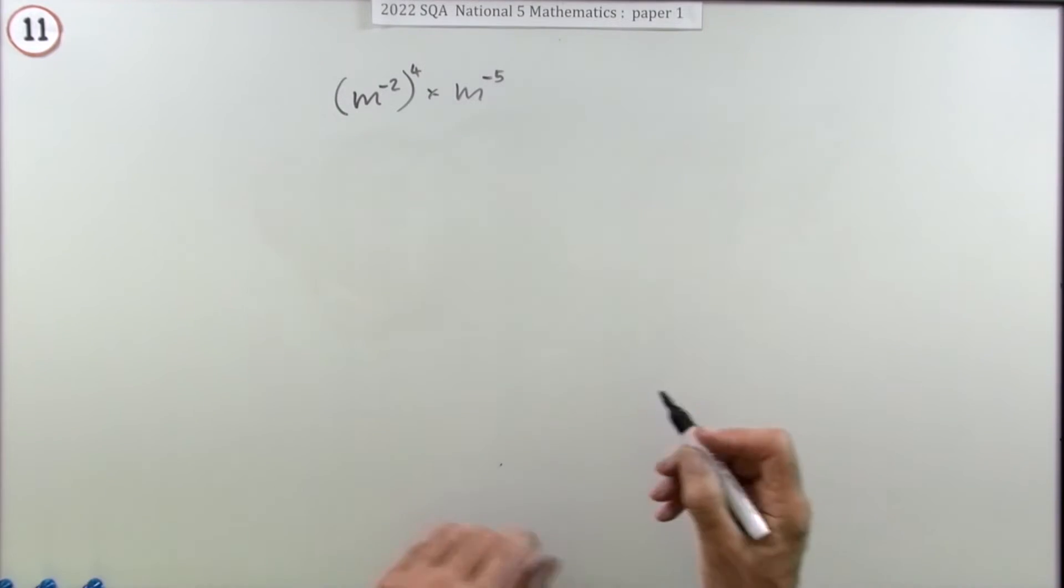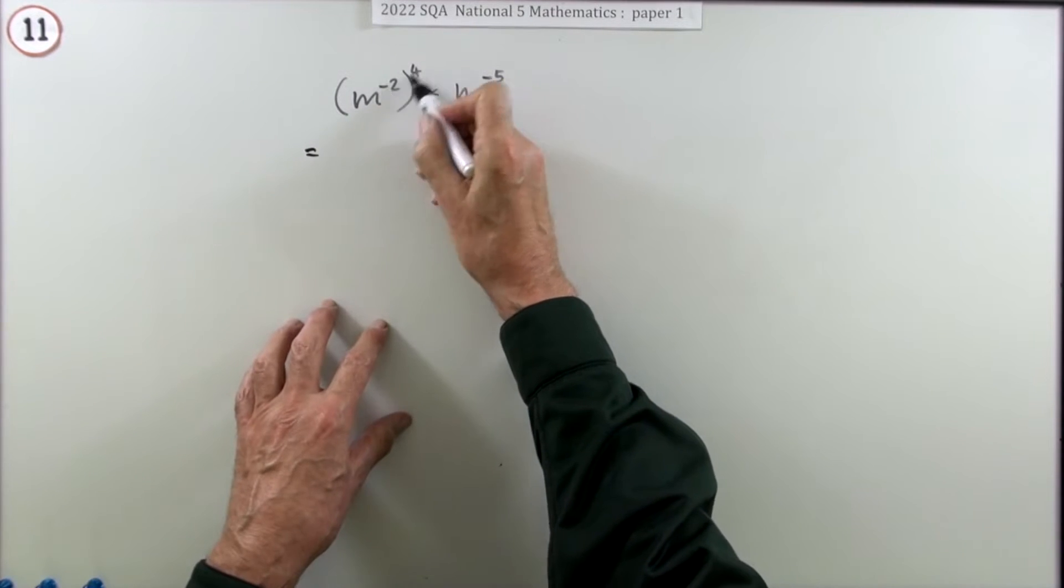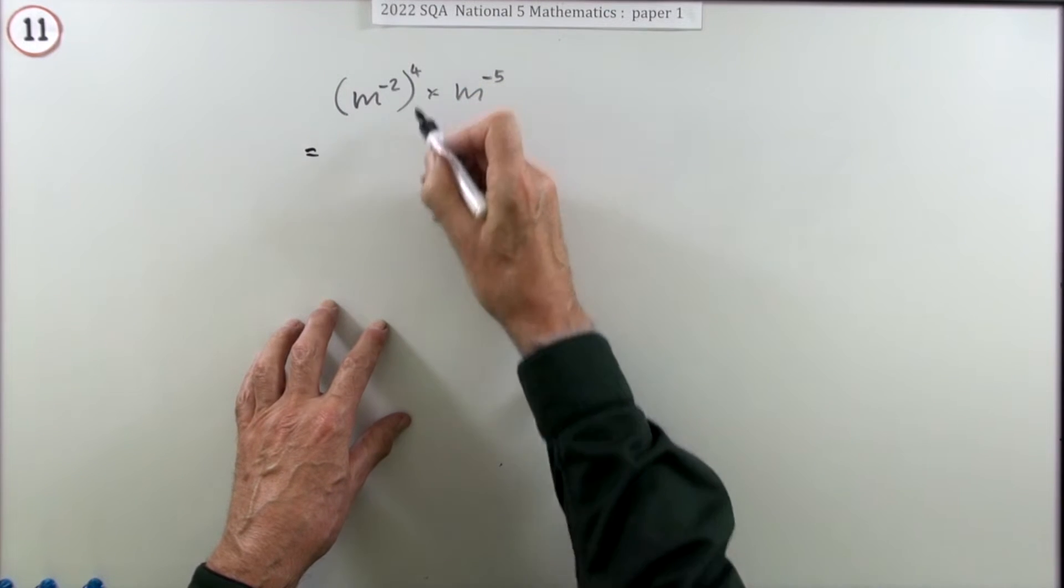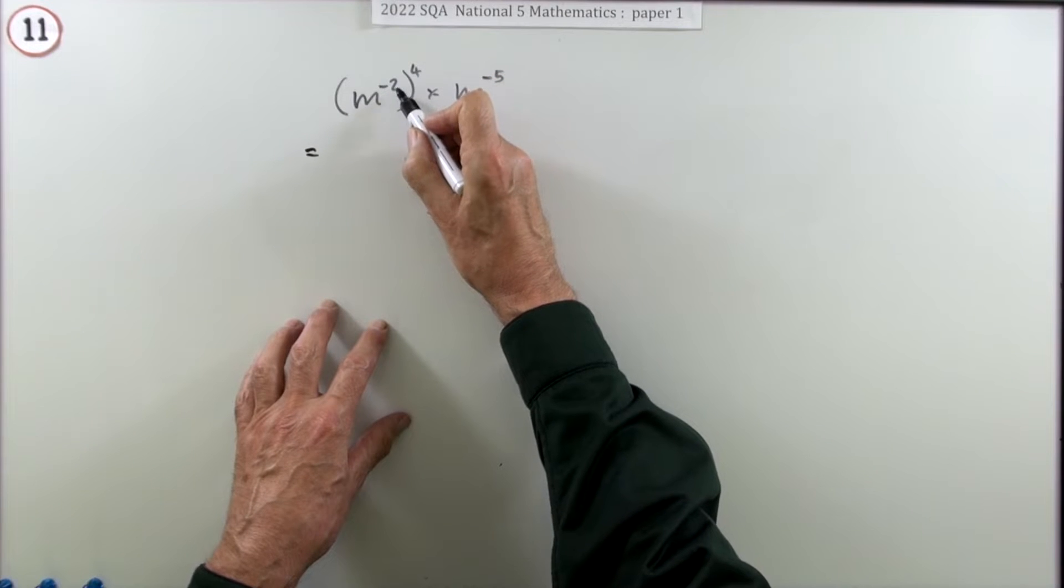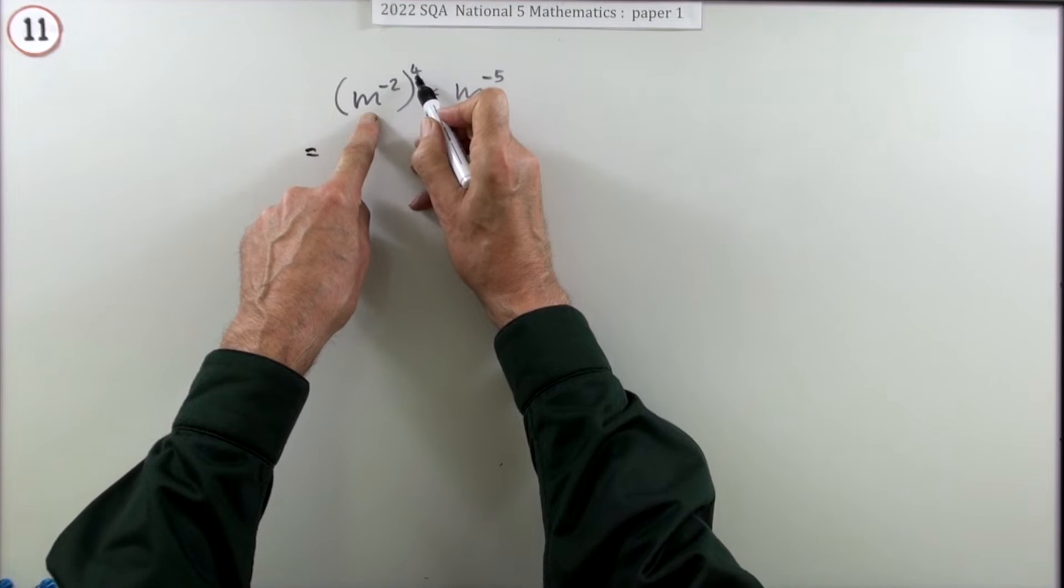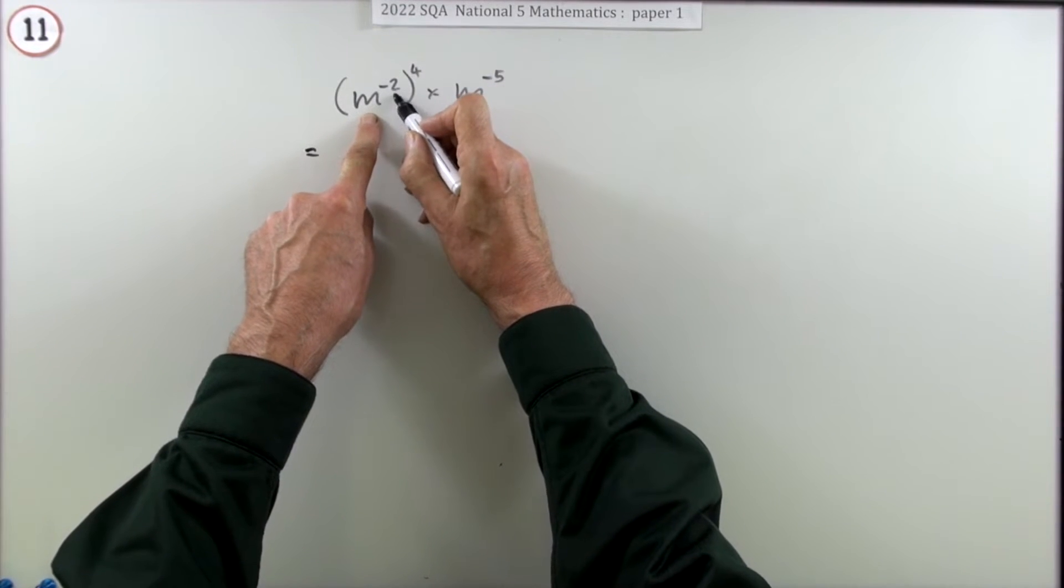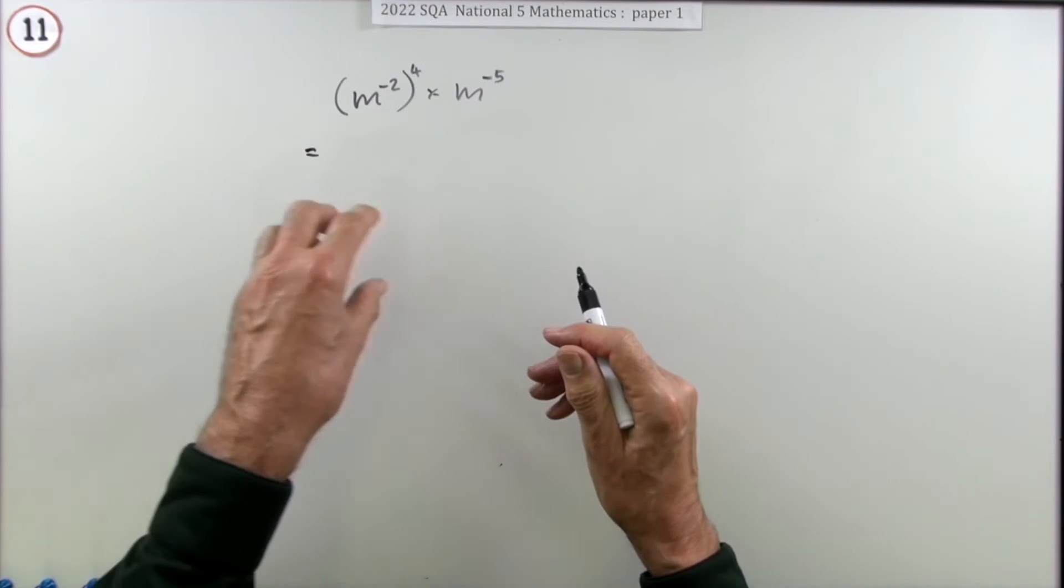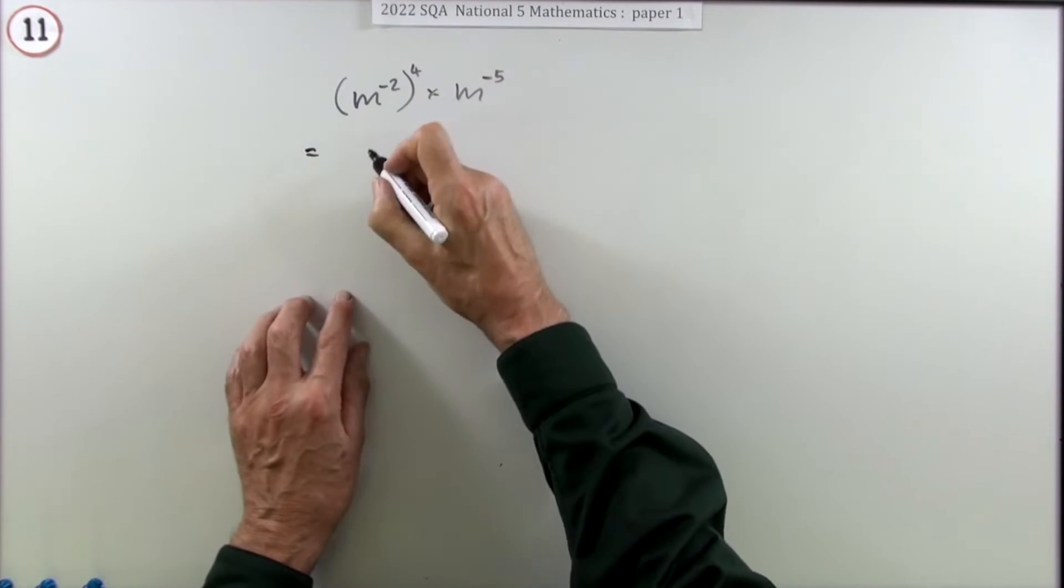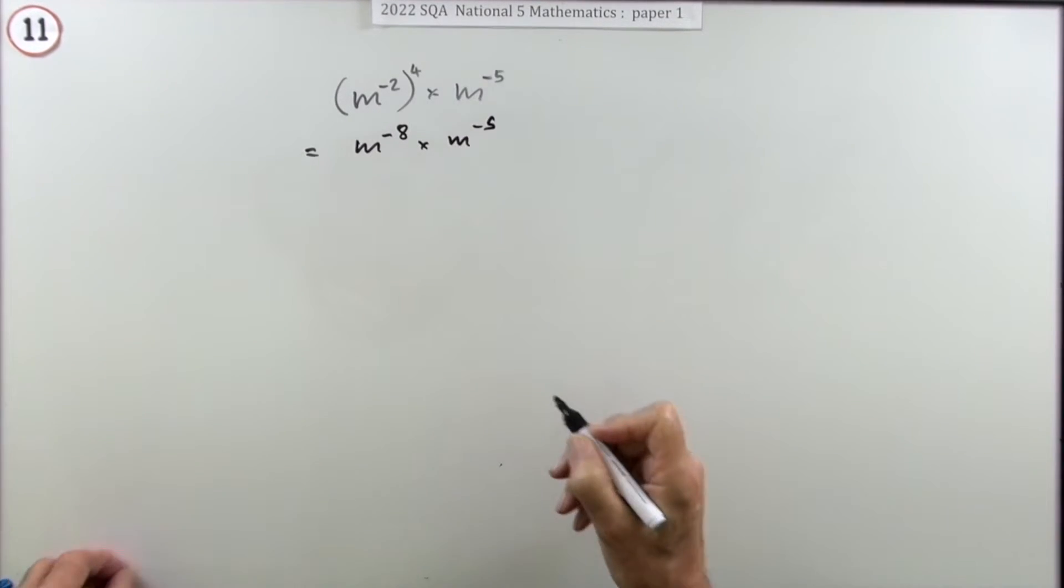Well there's three marks. The first mark will just be for sorting out this little bracket here. A power of a power simply means whatever you do, you're going to do that four times altogether as far as the number of multiplications is concerned. So if that says you're doing it twice, you'll be doing it twice and then twice and then twice and then twice. Multiplying them gives you m to the negative 8, so that's one mark.